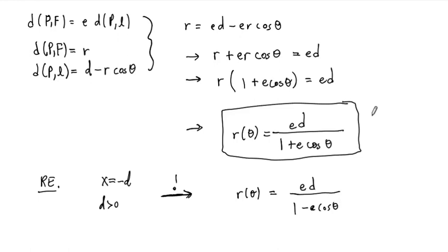The equation for the conic section with directrix X equals minus D is R equals E·D over (1 minus E·cosine(θ)). This is what happens if you switch the sign of the directrix and place it on the left-hand side of the plane.